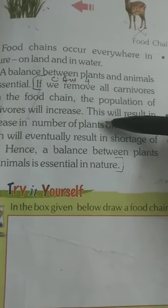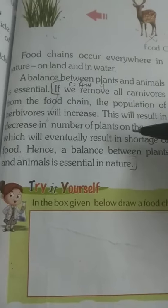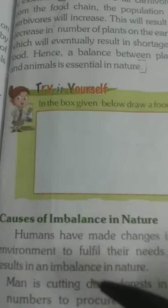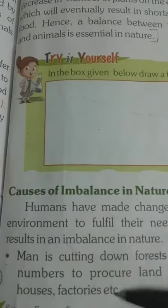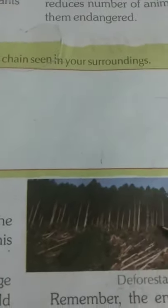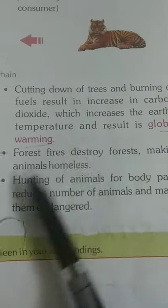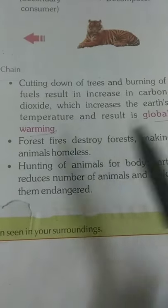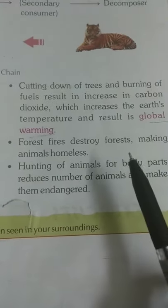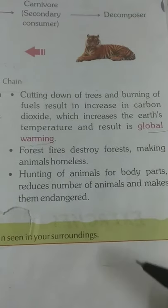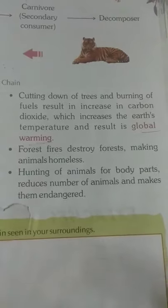Then we discussed: if we remove all carnivores, what will be the effect on the food chain? It causes imbalance in nature. Causes of imbalance include deforestation, which results in global warming. Forest fires also destroy habitats, making animals homeless. Hunting of animals for their body parts also causes imbalance in nature.